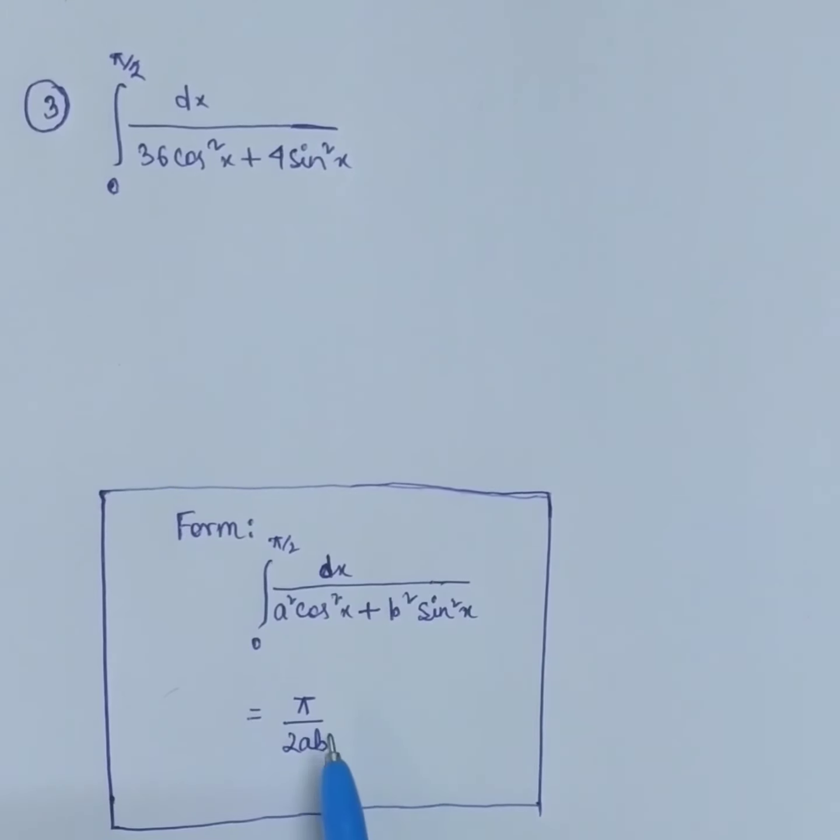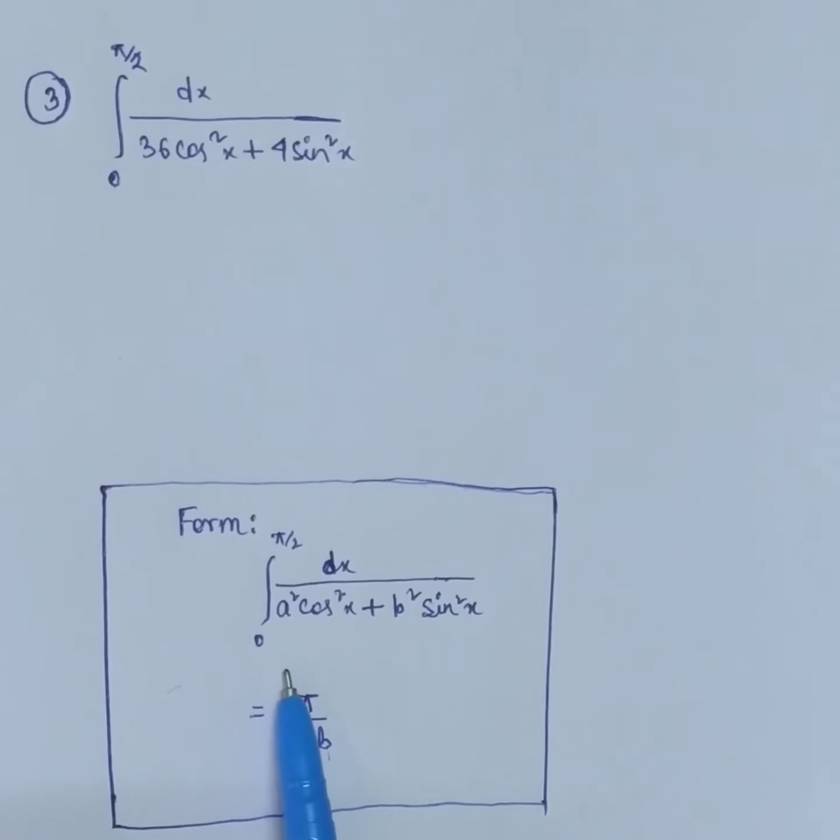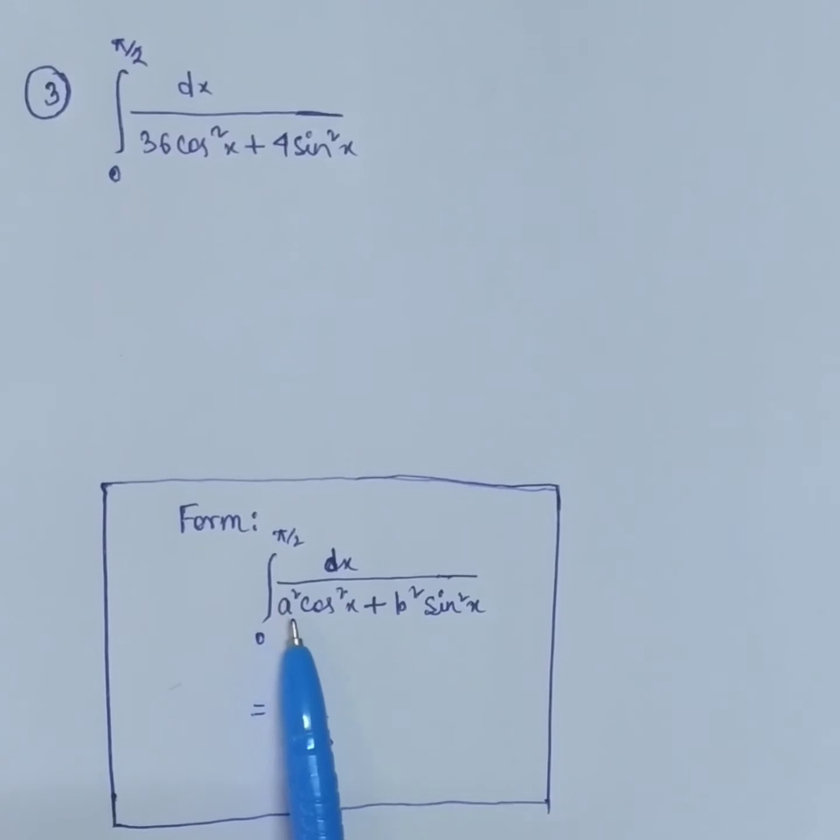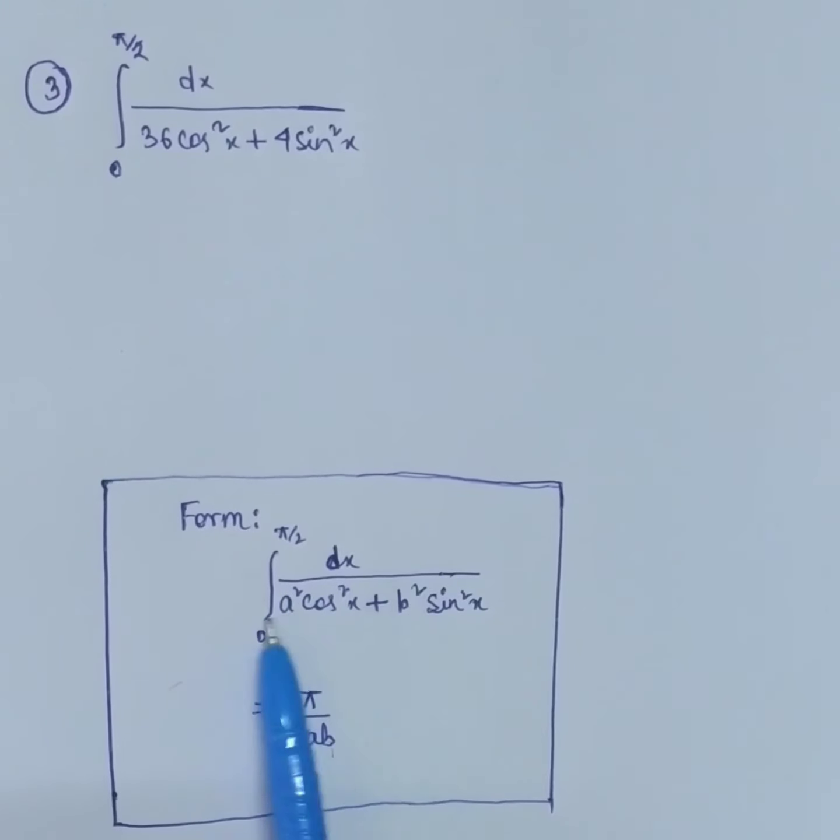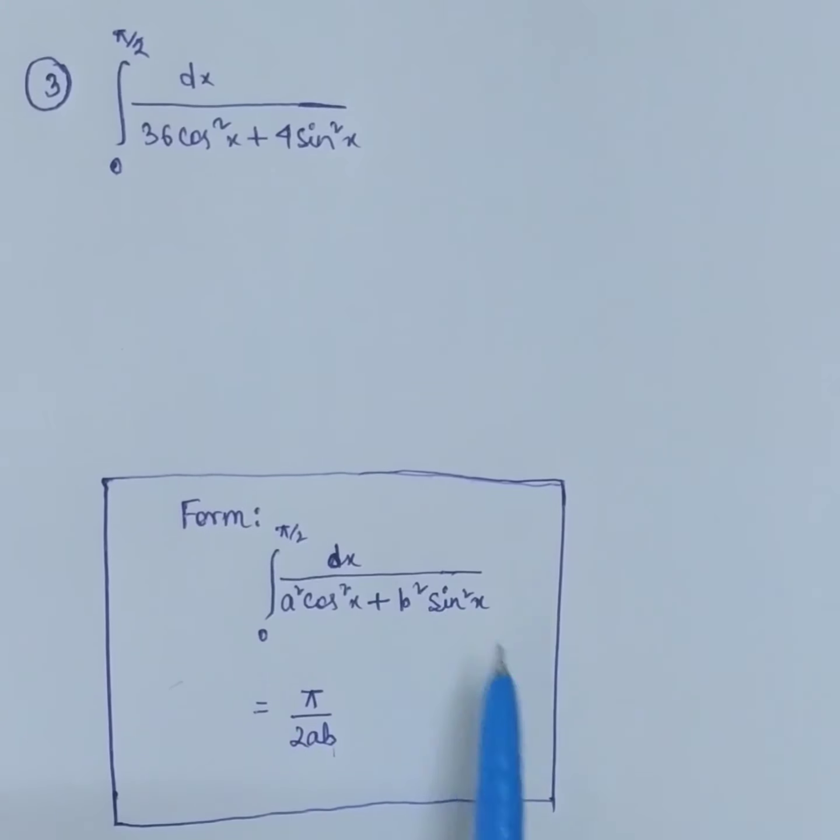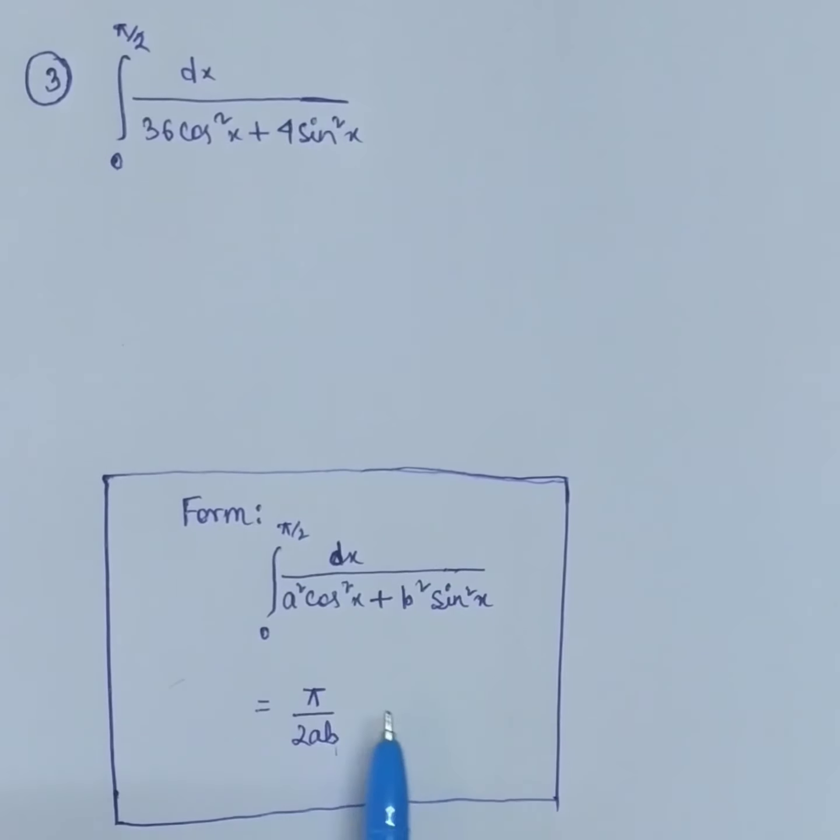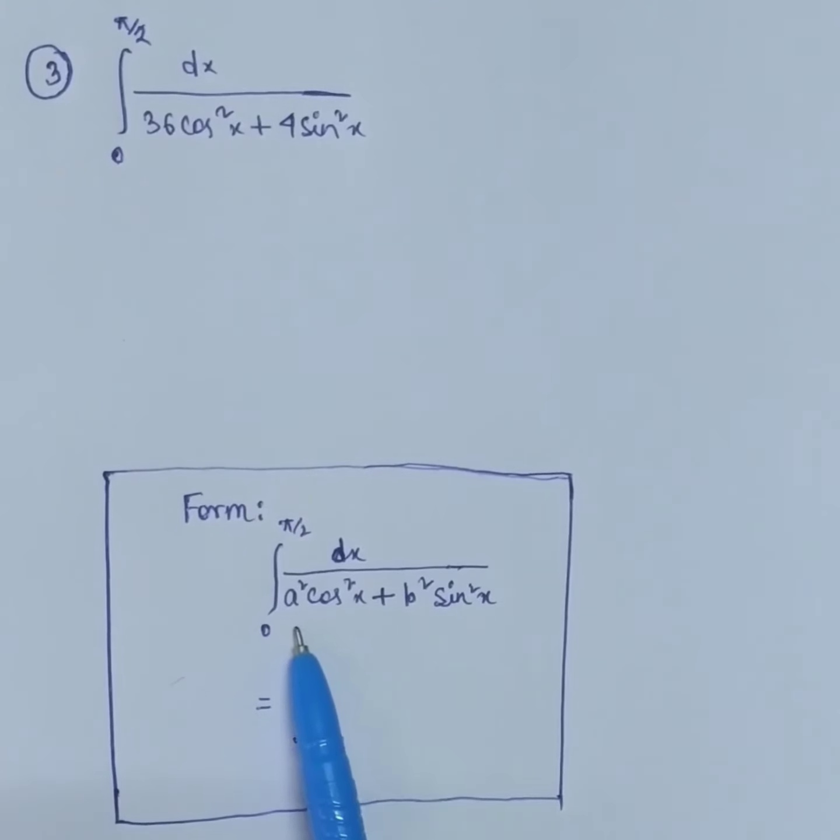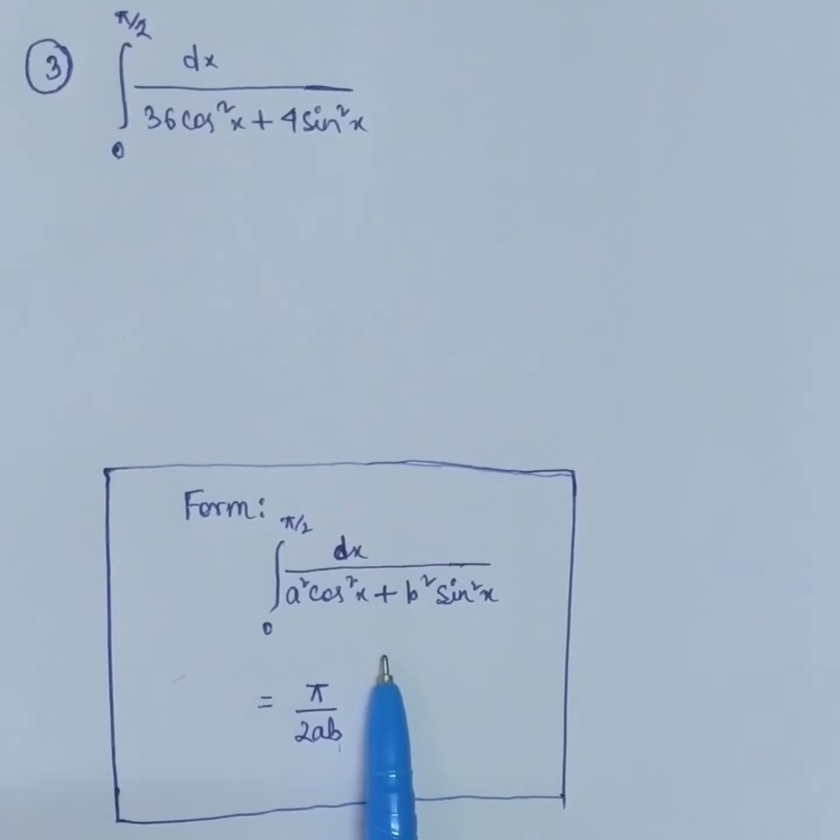Any question you get, directly put this formula, that is π upon 2ab. Here, this is perfect square - I mean a² here. You can use this formula when you have a² and b². There, a is √3 and b is 5.